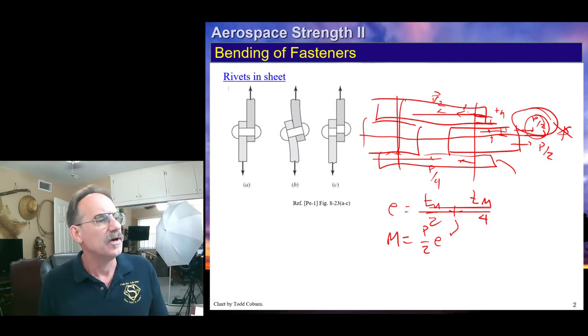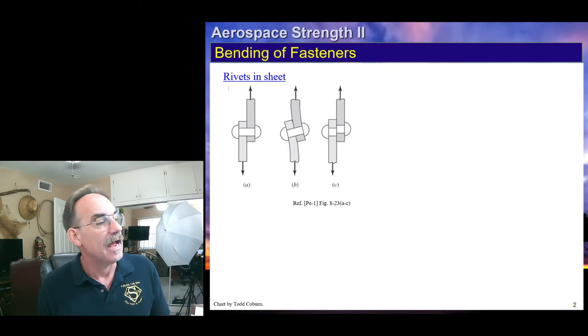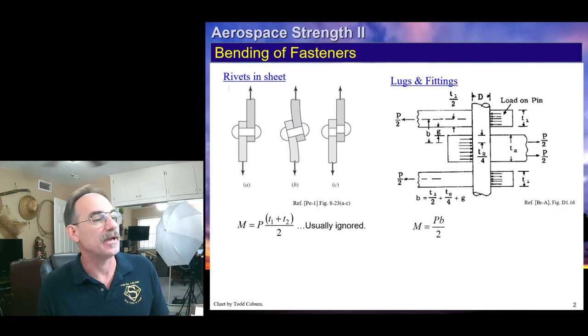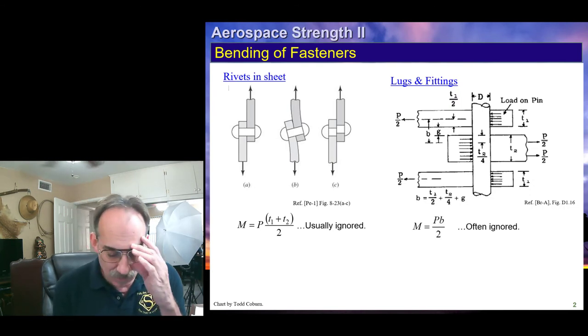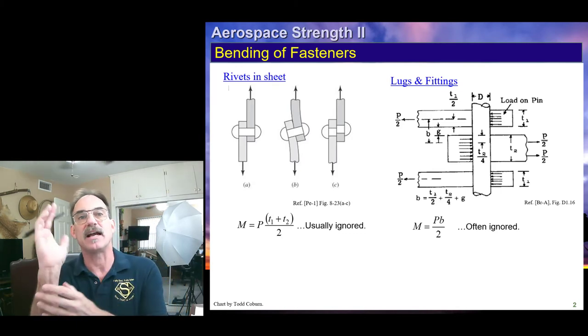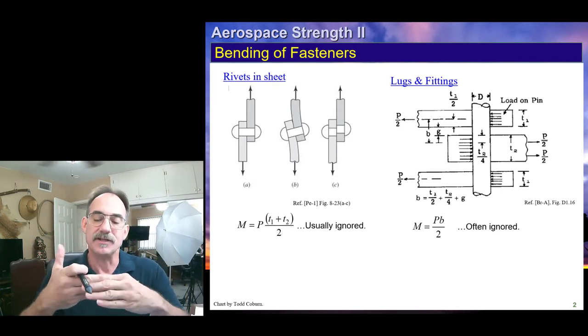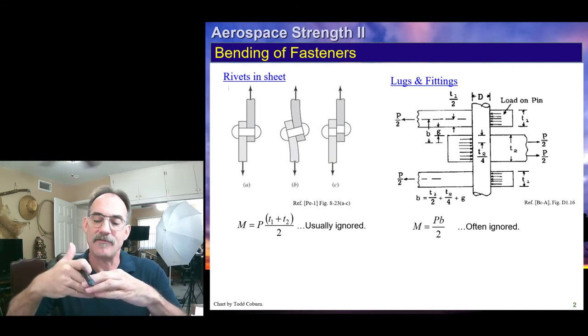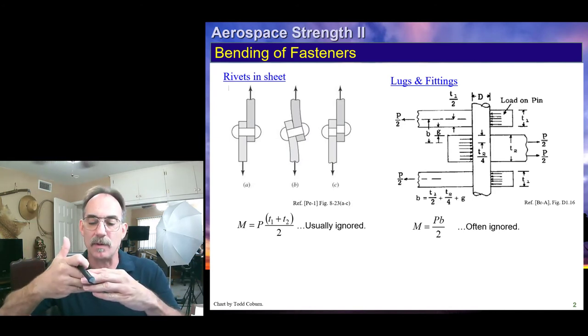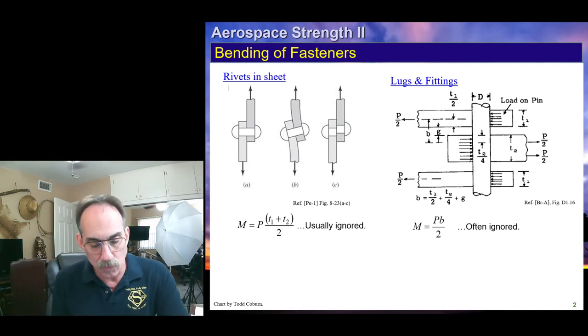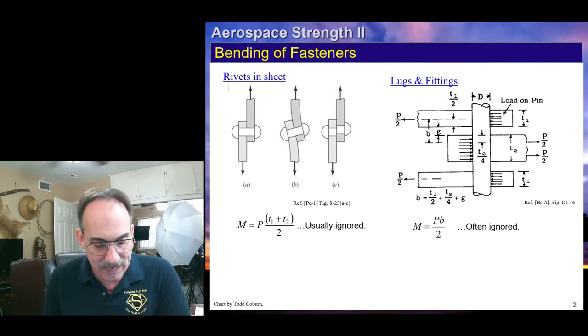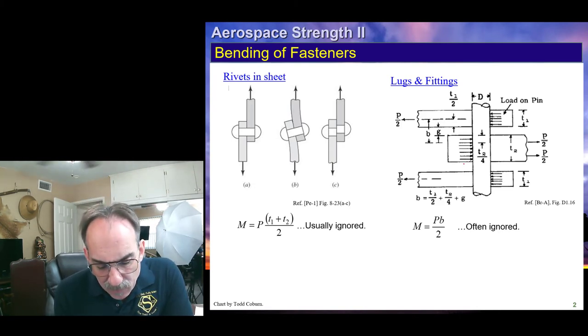But what if we have a joint that has some eccentricity? For example, this picture here from Brun's text. In this case, you'll notice that this is a loose fastener, like if we have a clevis. These are very common. A clevis will have extra room. You just drop the one plate in, shove a fastener through, and there tends to be a gap.